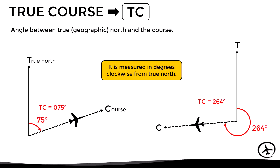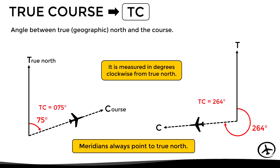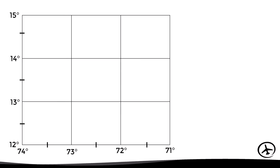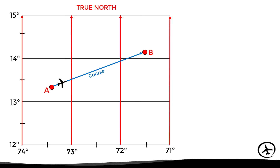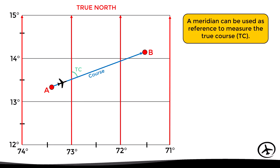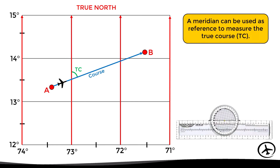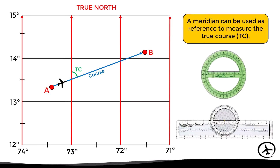Now, how can we measure the true course between two points using a map or navigation chart? Since all meridians converge at the geographic north pole, meridians always point to true north. In a navigation chart we can assume that meridians are like arrows pointing to true north. If we want to determine the true course between A and B, a meridian can be used as reference to measure it. In practice we can use a navigation plotter or any device capable of measuring angles — in this case the true course is 070 degrees.